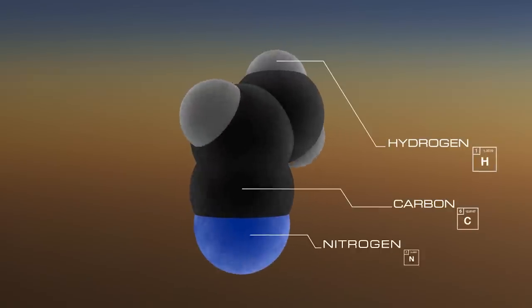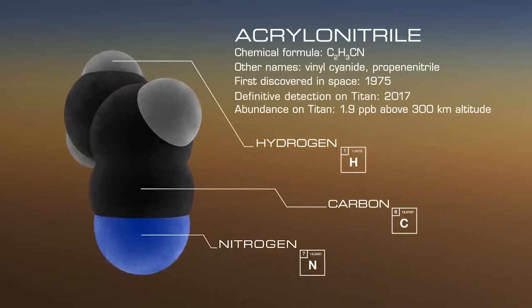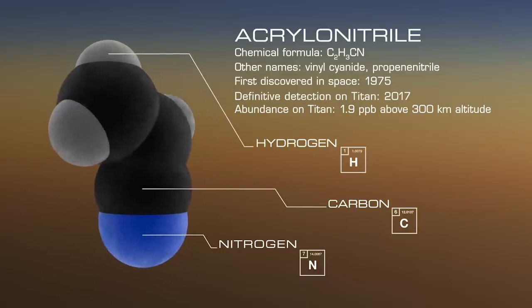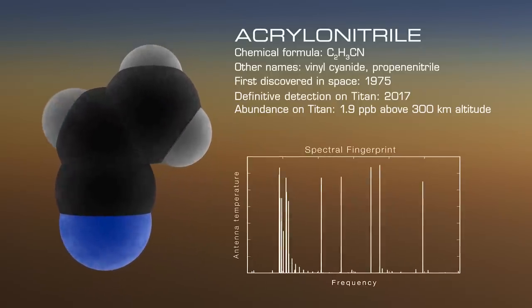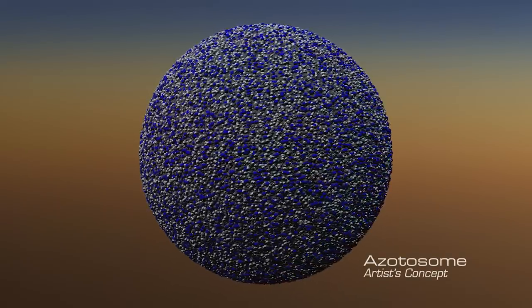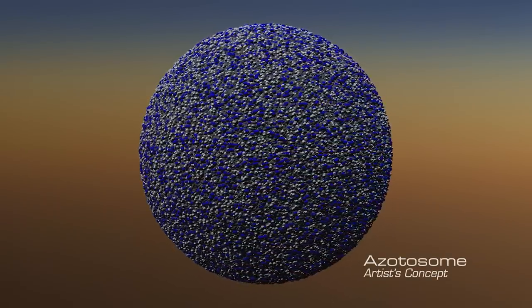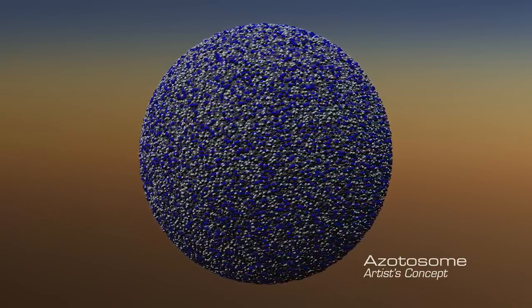They found the organic compound acrylonitrile could form a hollow microscopic sphere that they dubbed an azotosome. This protective sheet would provide the separation necessary for a stable cell membrane.